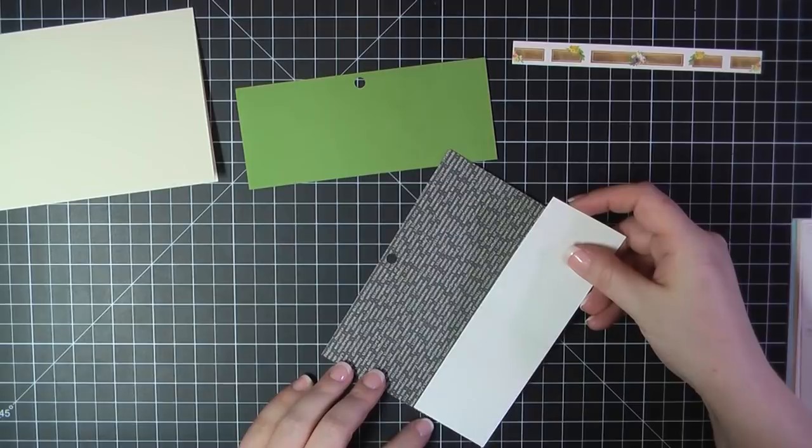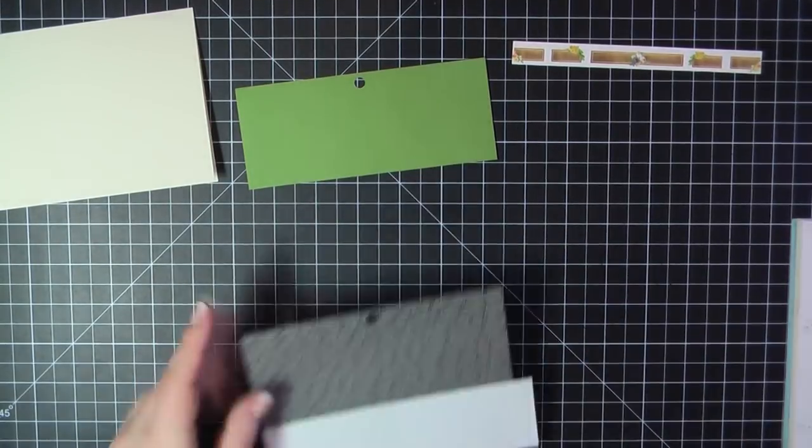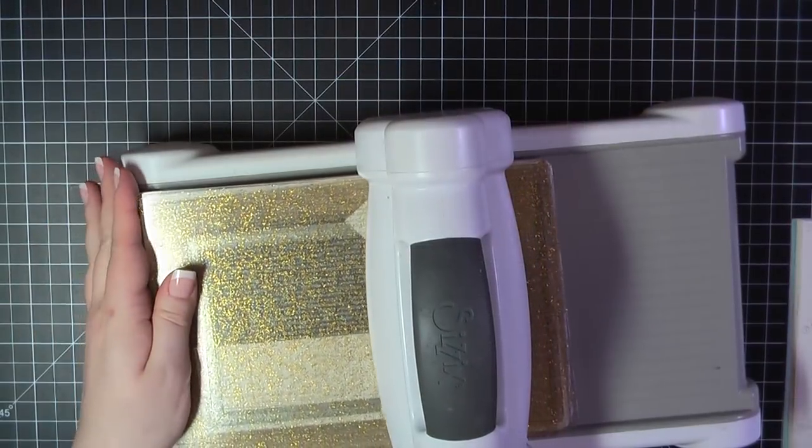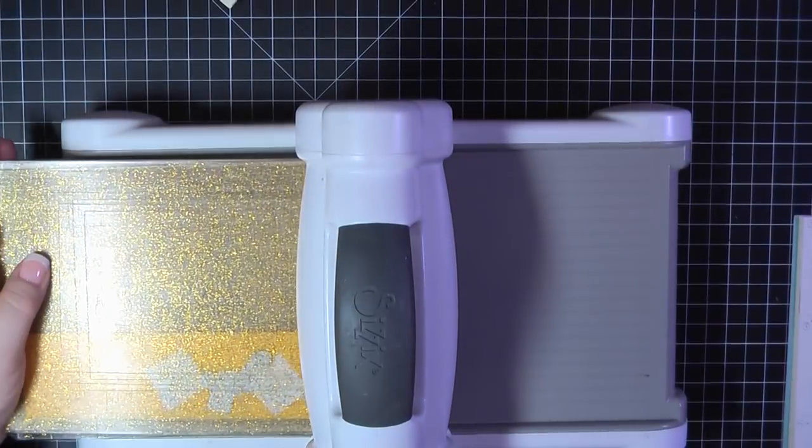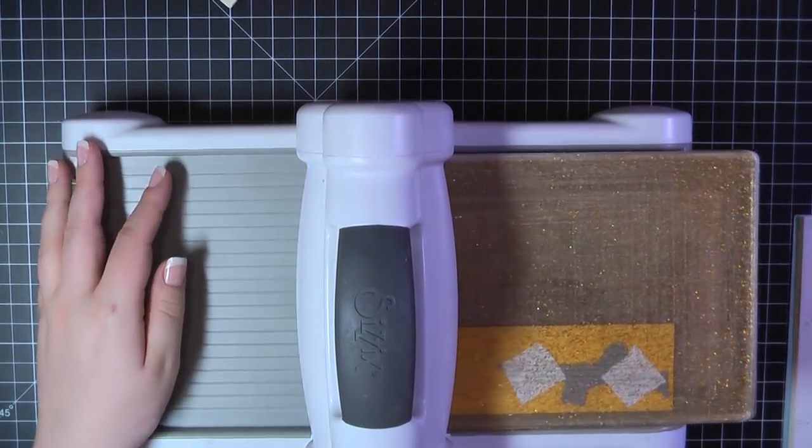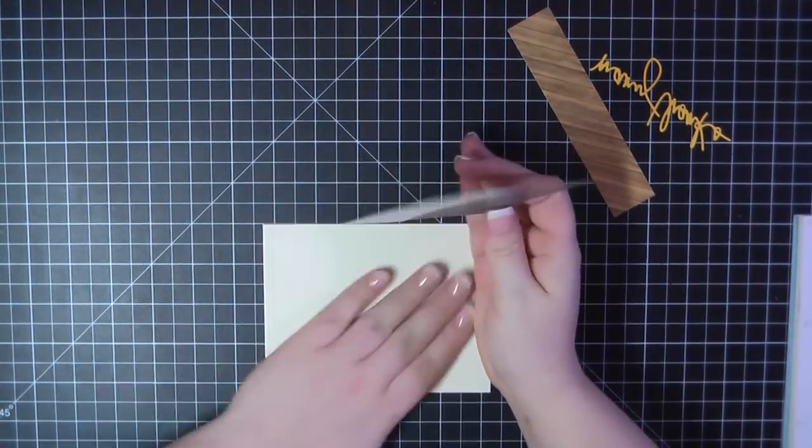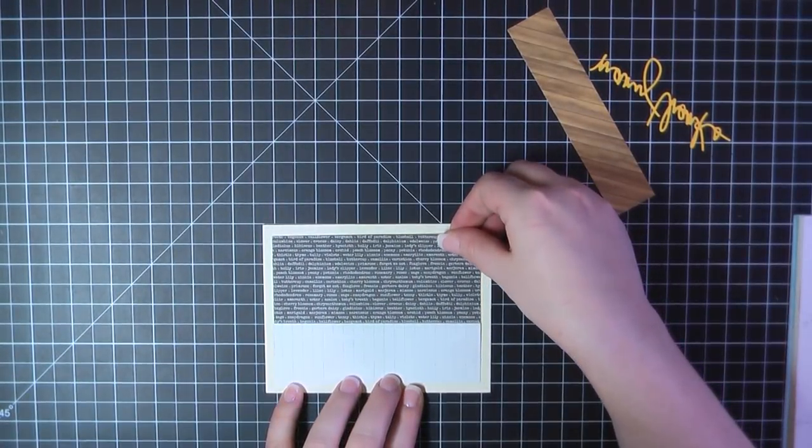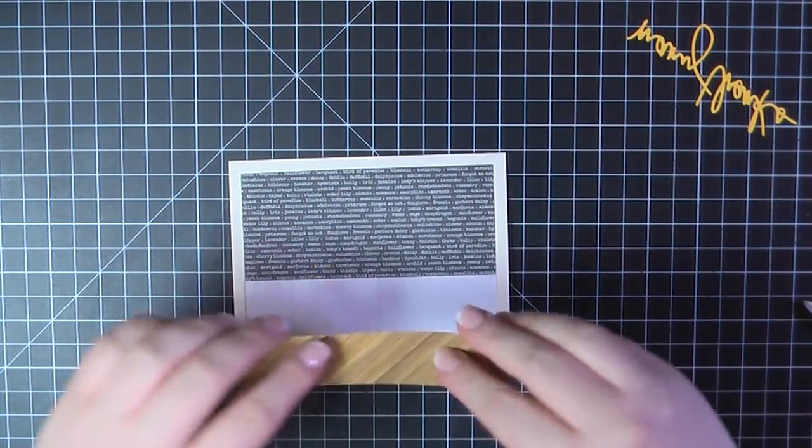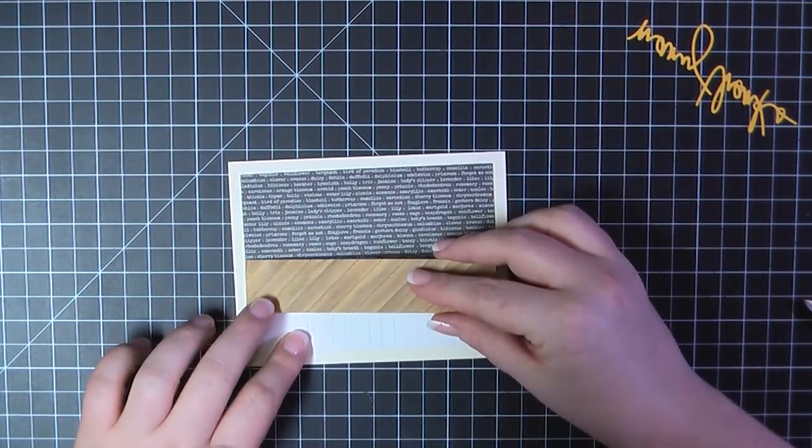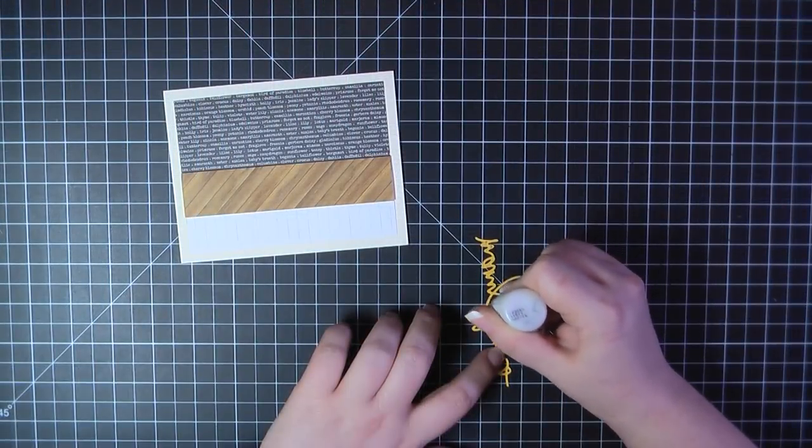For card number four, I'm going to create a background using this black word paper and this white wood paper. I'm just attaching those on top of one another there. I'm going to run that through with my MFT Blueprints 32 frame die. Final measurements ended up being the black is about two and a quarter and the white is one and a half inches. There you'll also see I'm using the Essentials by Ellen Many Thanks script die, and I ran that through using MFT Lemon Drop cardstock. I'm going to place that panel there on the top of this cream card base, one of the card bases that came in the kit.